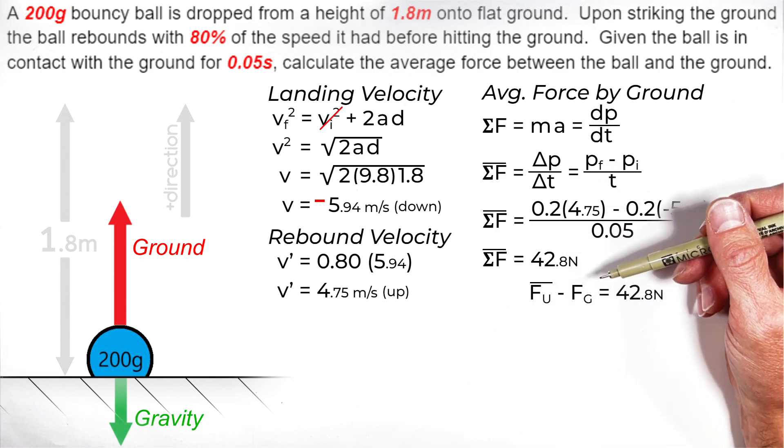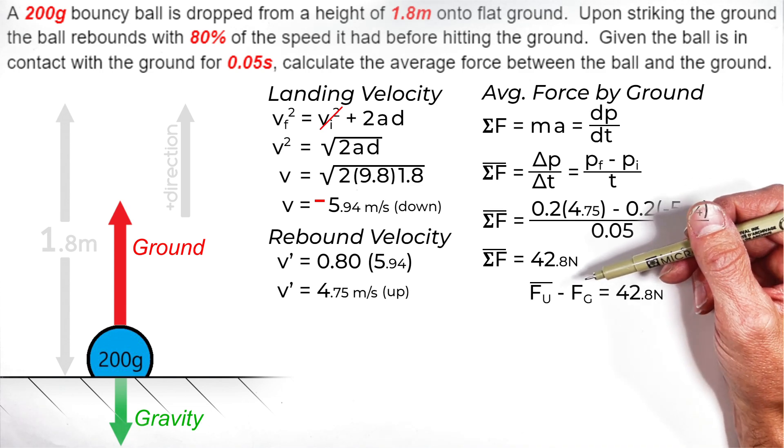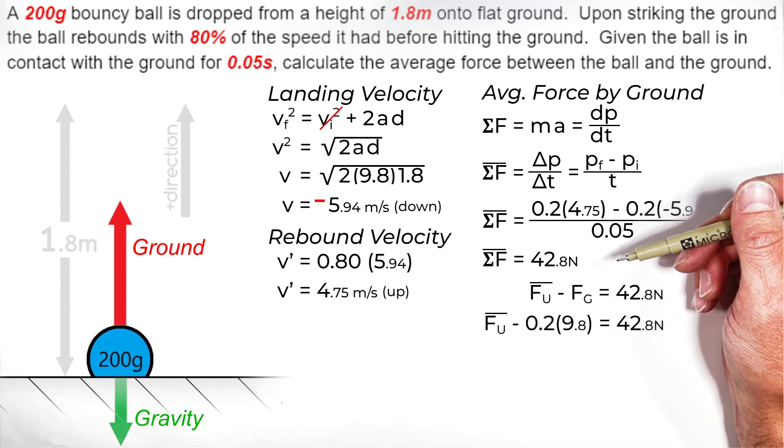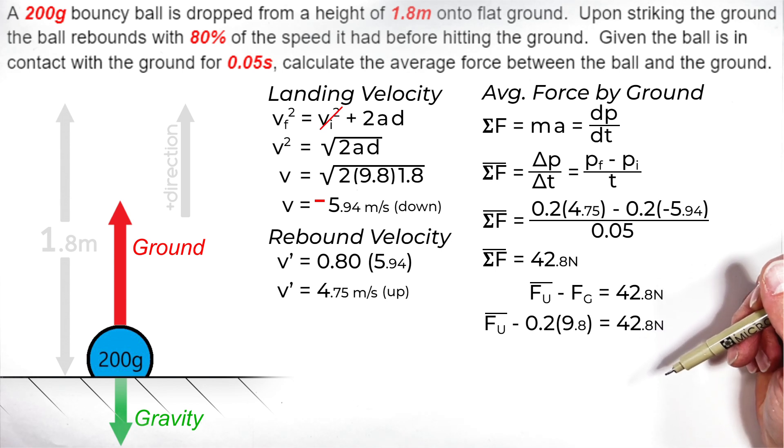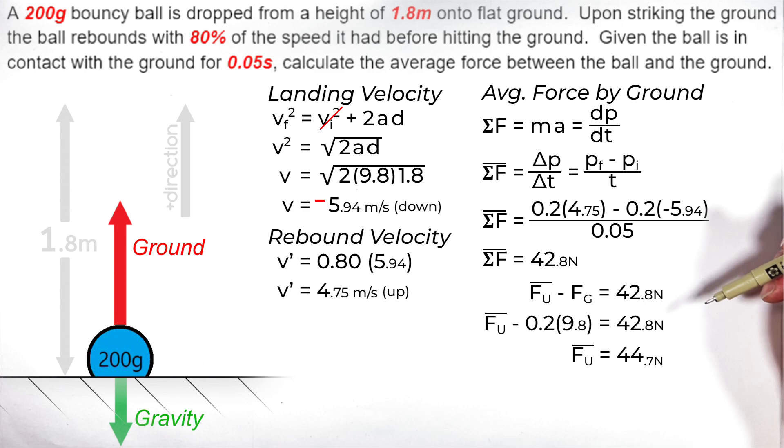So plugging in that the force by gravity is 0.2, that's the ball's mass, times 9.8, we can solve for the actual average force between the ball and the ground, which works out to be 44.7 newtons.